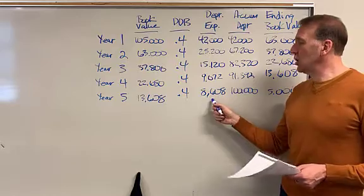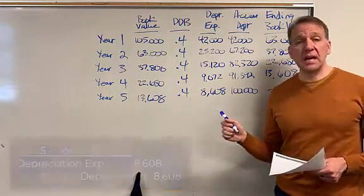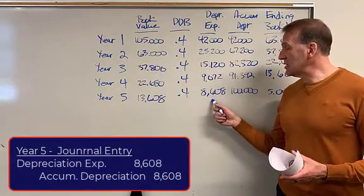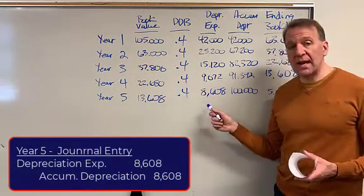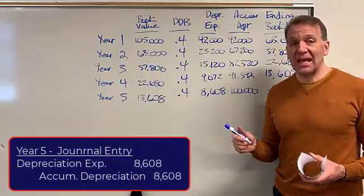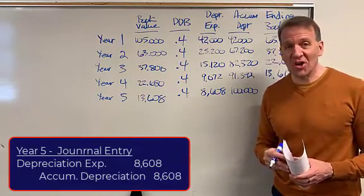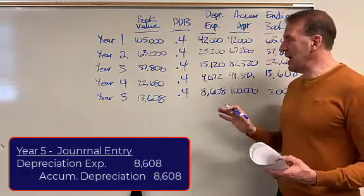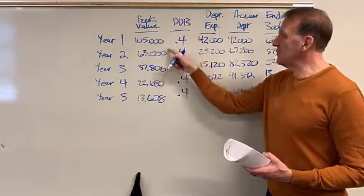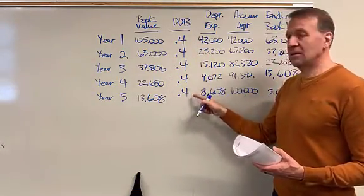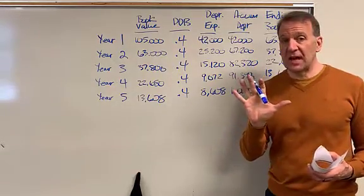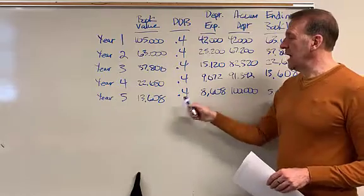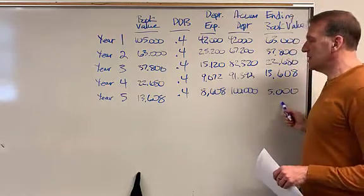So our journal entry in year five would be to debit depreciation expense $8,608, credit accumulated depreciation $8,608. So once again, what's tricky about this is getting your 40% here, because we were depreciating over five years, and then at the end, you've got to force this to work.